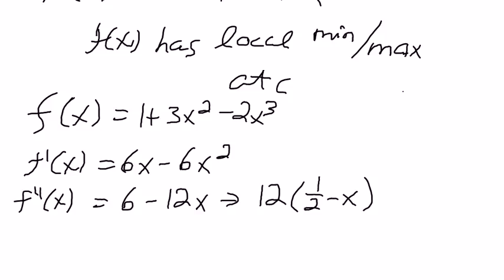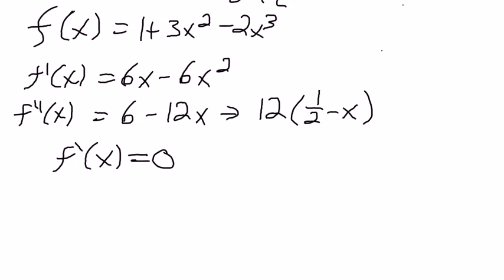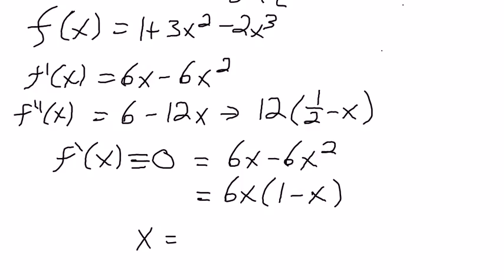So what values of x are going to give us our critical points? What are going to make f prime of x equal to zero? So you're going to have 6x minus 6x squared equal to zero. Factor out the 6x to get 6x times 1 minus x. Therefore, the critical points are zero or one.